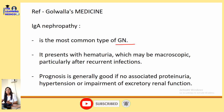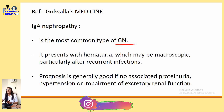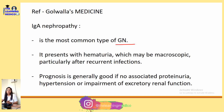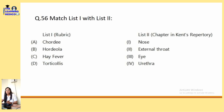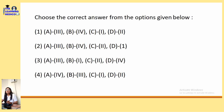The most common type of glomerulonephritis presents with hematuria, which may be macroscopic particularly after recurrent infection. Prognosis is generally good if not associated with proteinuria, hypertension, and impairment of excretory renal functions.